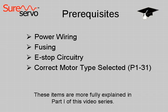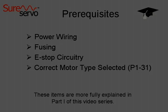We'll assume that you have already jogged the motor as shown in the earlier video. At this point, power, fusing, and an e-stop contactor should all be wired appropriately. See Chapter 3 for wiring information. The motor code in P131 should also be set to the correct motor type.